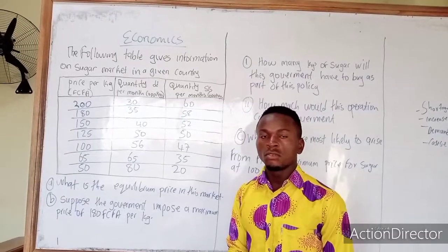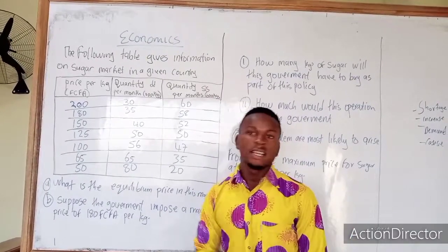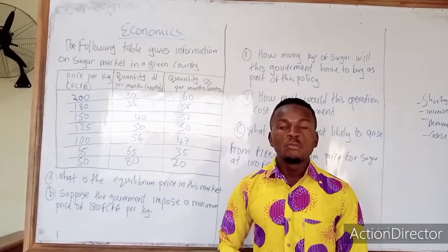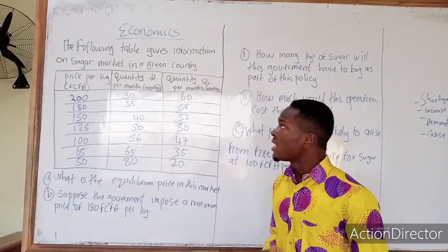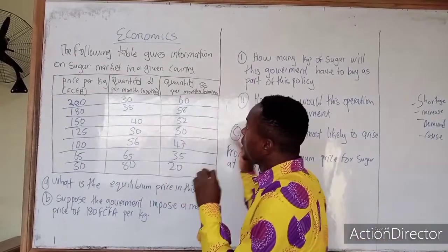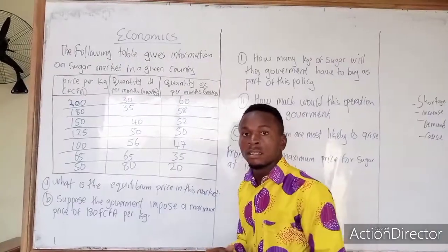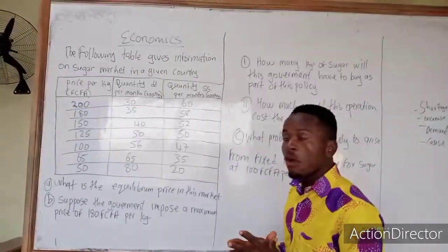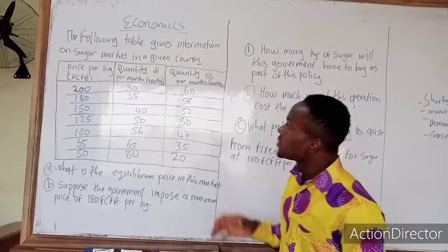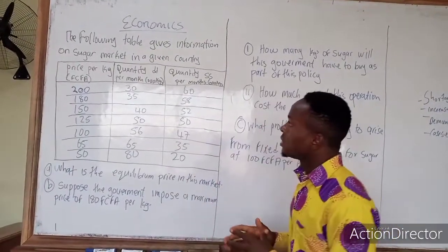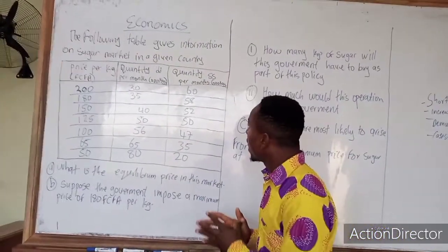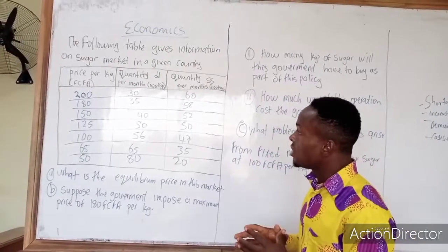Welcome to Benjamin Academics. Today's video is number 4 on the calculation of price and demand, and how to determine an equitable price in the market. Looking at the question on the board, the following people give information on the sugar market in a given country, showing the price per kilogram in Francs, the quantity demanded per month in 1,000 kg, and the quantity supplied per month in 1,000 kg.